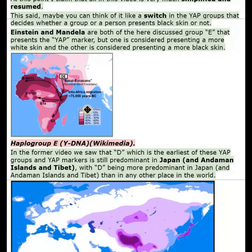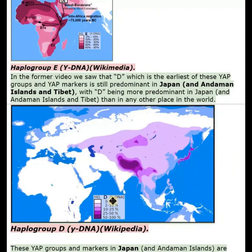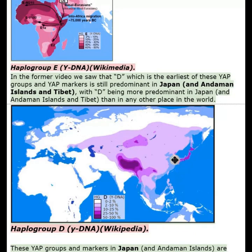In the former video we saw that haplogroup D, which is the earliest of these YAP groups and YAP markers, is still predominant in Japan and Andaman Islands and Tibet, with D being more predominant in Japan and Andaman Islands and Tibet than in any other place in the world.